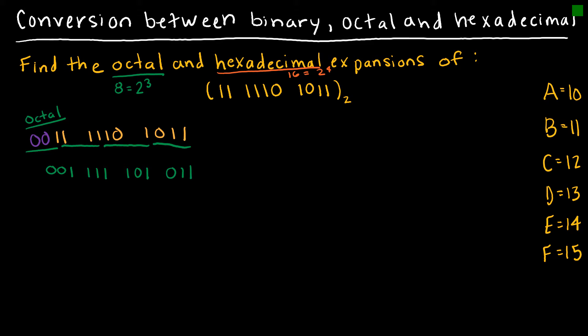I want to take those 4 groups of 3 and turn them into octal values. For octal, we have three places: 2 to the 0 which is 1, 2 to the 1st which is 2, and 2 squared which is 4. So for the first group, I have 0 fours, 0 twos, and 1 one, which adds up to 1.